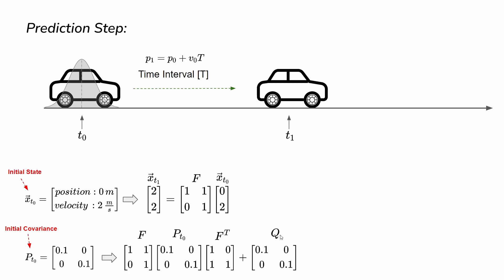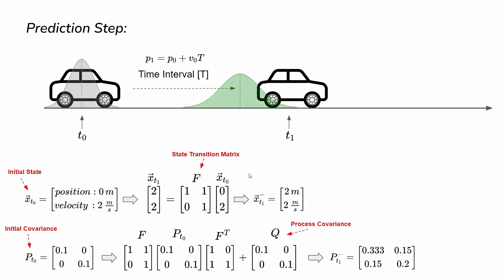Here we add the process noise covariance, and we apply the transformation to the initial covariance using the F matrix. The result is that the predicted position is two meters, and the velocity is constant at two — so the vehicle moved from position zero to position two. That is the prediction, and in the prediction the velocity did not change.